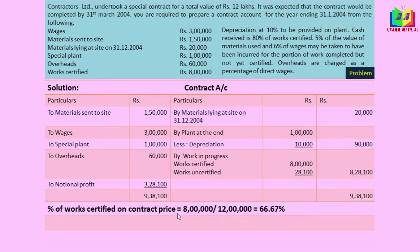The percentage of work certified on contract price: work certified is 8 lakh and the contract price is 12 lakh, so 8/12 = 66.67%. This falls under the third category — more than 50% — so for more than 50% of work certified on contract price, we have to transfer two-thirds of the notional profit to profit and loss.